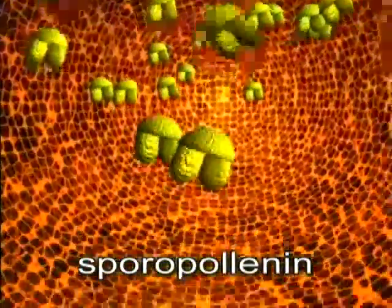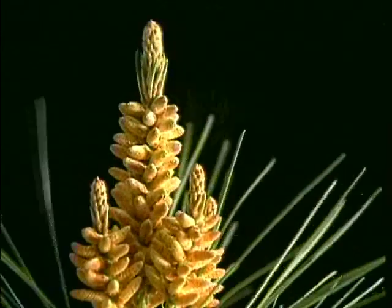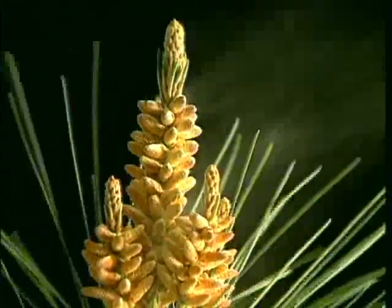A final deposit of sporopollenin completes the formation of the pollen grains, and they are released when the microsporangium opens. The pollen grains are now easily dispersed by air currents.